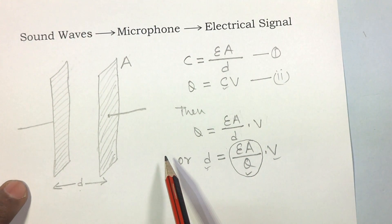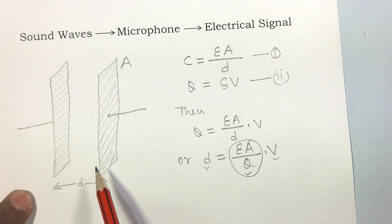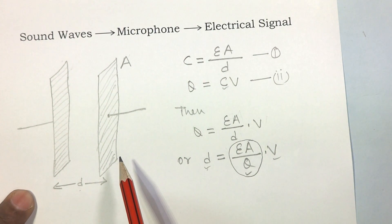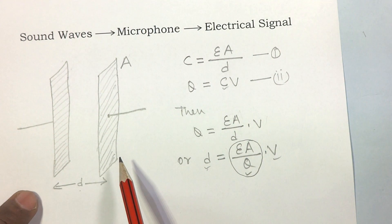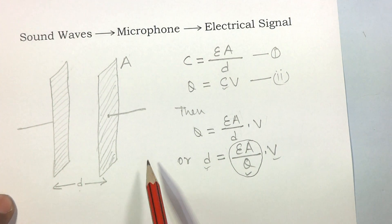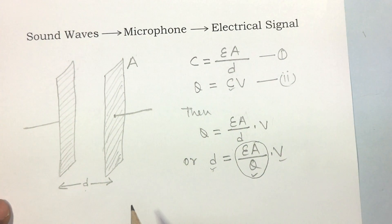There is a capacitor in the condenser microphone. The front plate of the capacitor is set to vibrate due to sound pressure. Due to vibration of this plate, the distance between plates changes. Hence, voltage of this capacitor changes as per the sound pressure. Let us draw the structure of a condenser microphone.